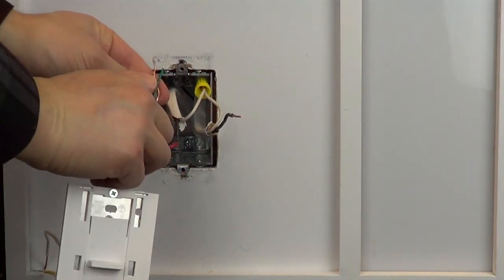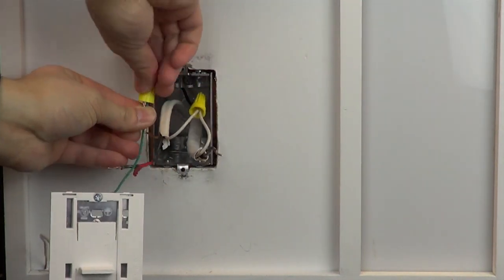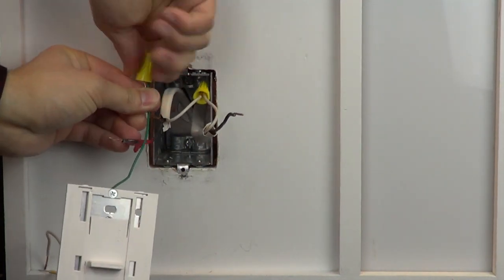Use a wire cap to connect the ground wire to the green wire on your new control. If you do not have a ground wire in this wall box, simply place a cap on the green wire on the control.